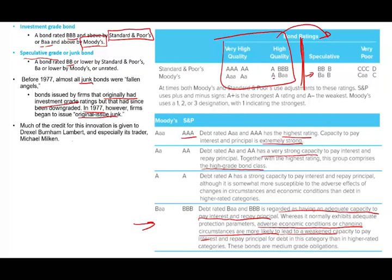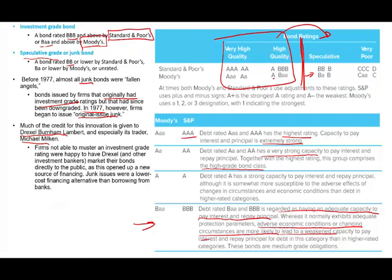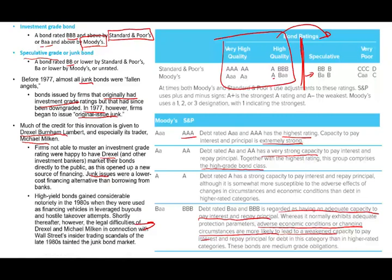Much of the credit for this innovation goes to a firm called Drexel Burnham Lambert, and especially its trader Michael Milken. Firms not able to obtain investment grade ratings were happy to go to Drexel, which raised money for them through junk bonds. High yield bonds were very famous in the 1980s and were used to finance leveraged buyouts and hostile takeovers. Eventually, Drexel and Michael Milken got into trouble on Wall Street from insider trading scandals, and the junk bond market lost some steam.